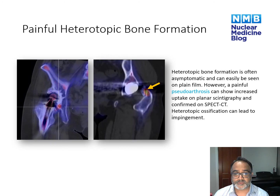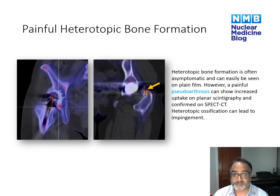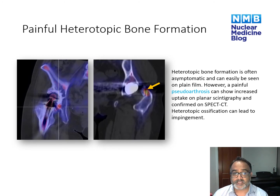We can also assess for heterotopic bone formation, a common complication of joint replacements that can often be seen on plain film, though those are non-specific findings. On SPECT CT, you can sometimes see focal uptake at the interface between the heterotopic bone and the native bone, and sometimes you can see impingement due to close approximation of heterotopic bone.